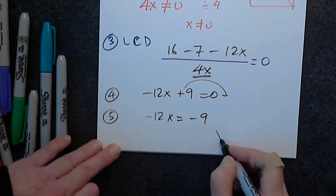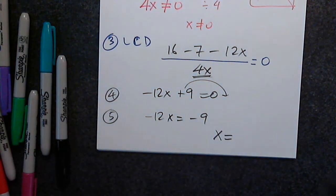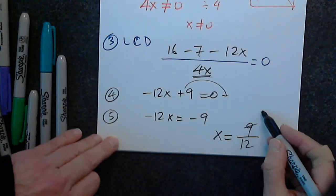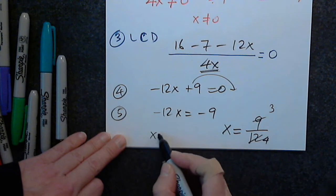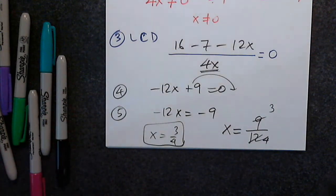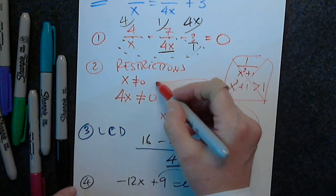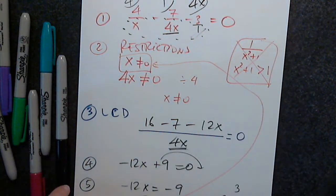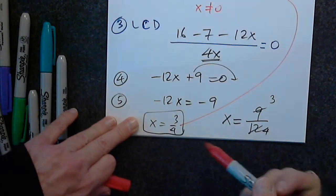How do I solve this? Divide by negative 12. So 9 divided by 12 — negative divided by negative is positive. Simplify 9 over 12: x equals 3 fourths. My first concern is to check against the restrictions. Is 3 fourths equal to 0? No. So this is the solution.